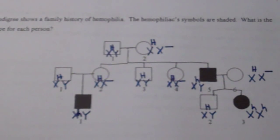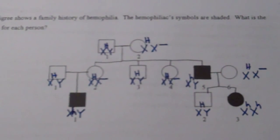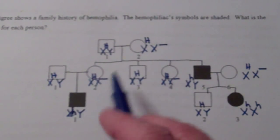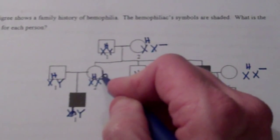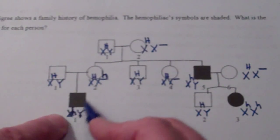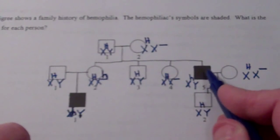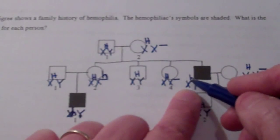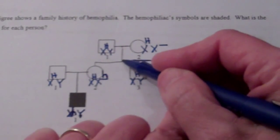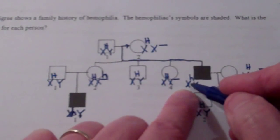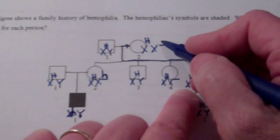Now we need to figure out the second allele for all of these females. Looking at this clue child — this X^h — tells me that mom must have had an X^h, so give her that little h. The Y came from dad, therefore this X^h must have come from mom. Here's another clue child — this is X^h Y — and going up to mom: mom didn't give the Y, the Y came from dad, so what did mom give this kid? The X^h. So that's an X^h.